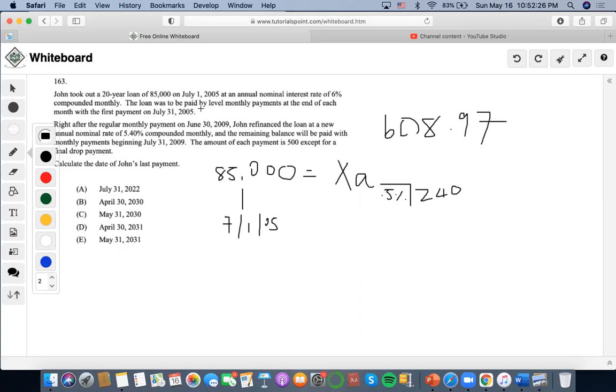Now, the loan was to be paid by monthly payments, with the first payment on July 31st. Okay, so first payment would occur on the 31st of 2005.